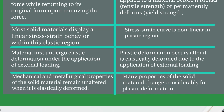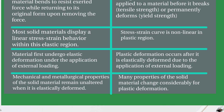Stiffness occurs in the elastic region. In the case of strength, the stress-strain curve is non-linear in the plastic region, especially when considering ultimate tensile strength. For stiffness, the material undergoes elastic deformation under external loading; for strength, plastic deformation occurs after elastic deformation due to the external load, since ultimate tensile strength occurs in the plastic region. For stiffness, the mechanical and metallurgical properties of the material remain unaltered during elastic deformation. For strength, many properties change considerably during plastic deformation, but until the yield point, no properties change.